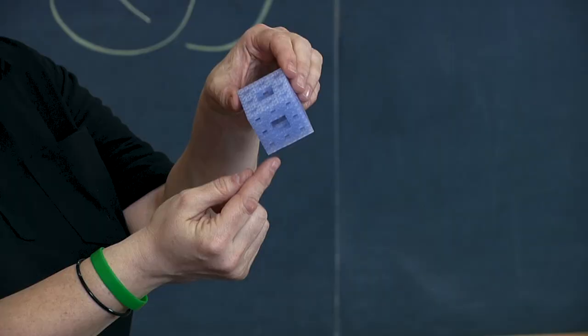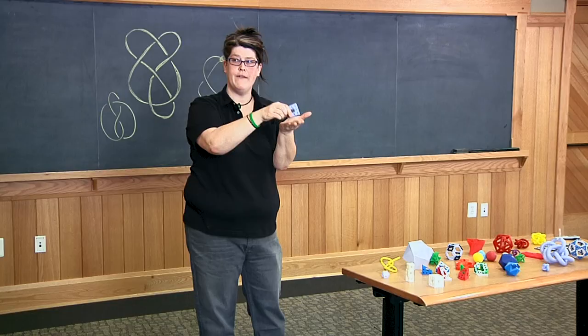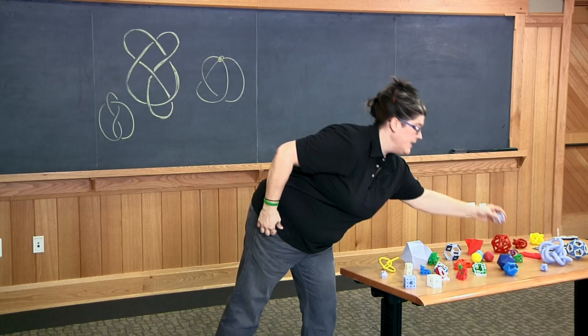you don't want to print it on its corner because it would not be very stable, right? You need to be having some contact with the platform, and he wanted to make it so that every knot we printed actually sat on three places.